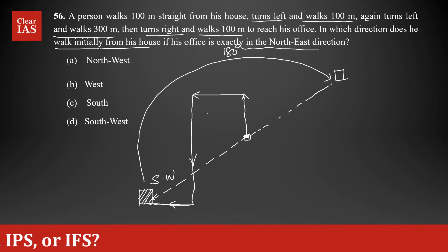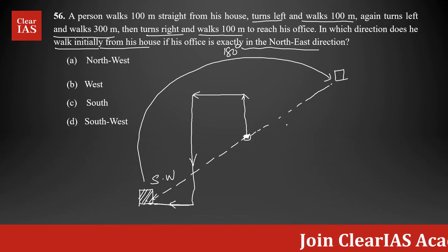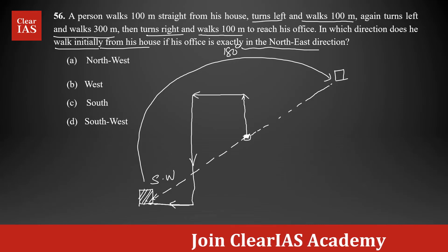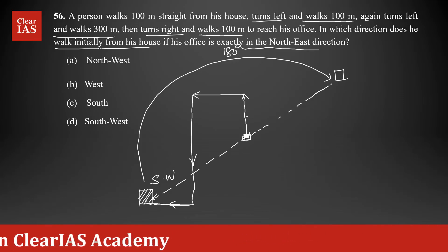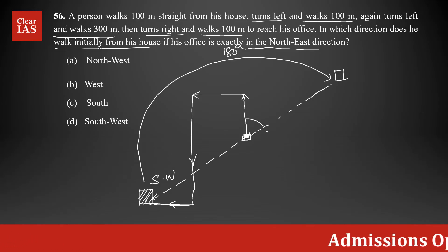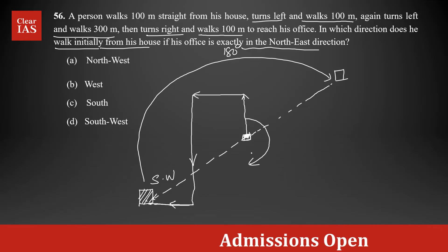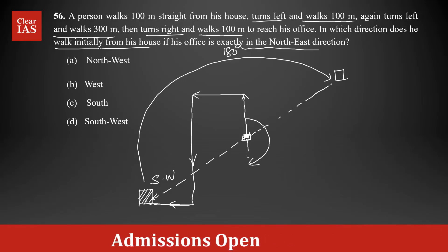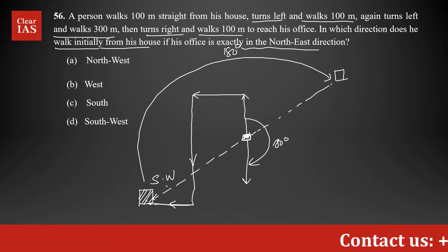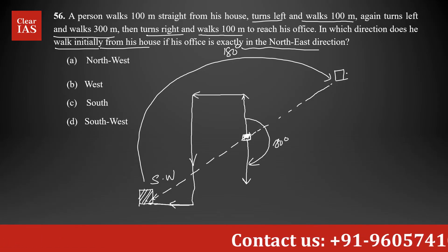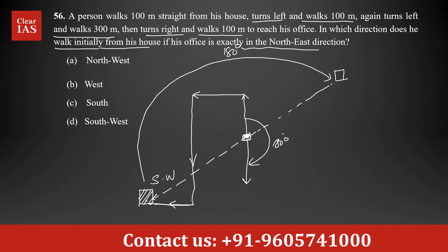So that means the entire figure should also rotate by 180 degrees clockwise. That means his home — initially he was walking north. This also should change; the figure will flip 180 degrees. You need to rotate 180 degrees clockwise. So initially, he should walk towards south — 180 degrees. Then only the office will be at the northeast position.